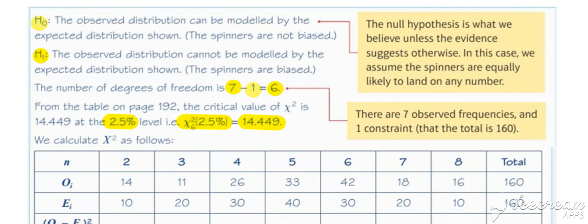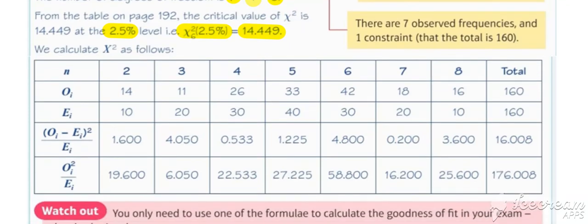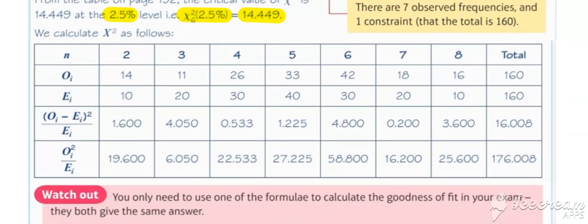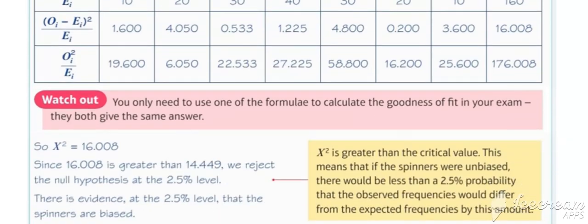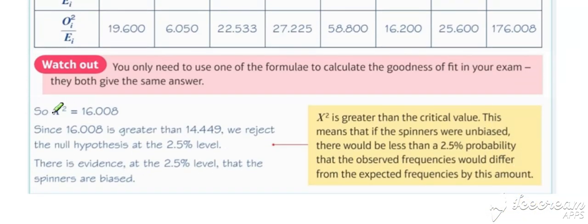Then from your calculator, you can then calculate your goodness of fit statistic. So that comes out to be 16.008.